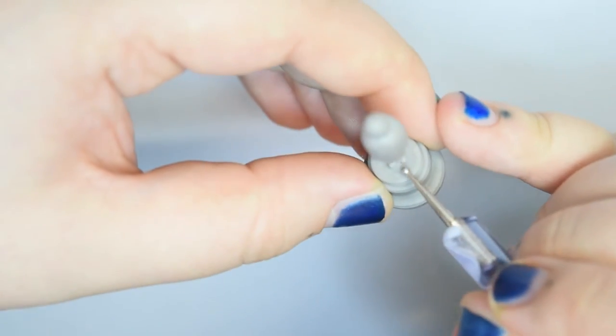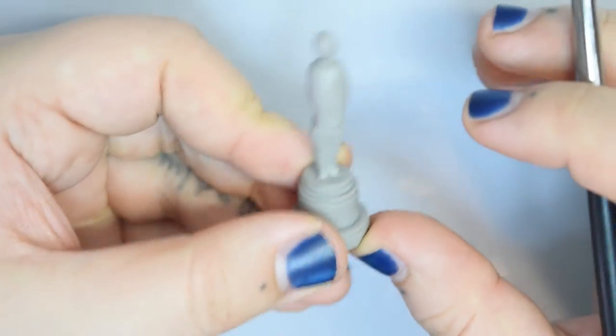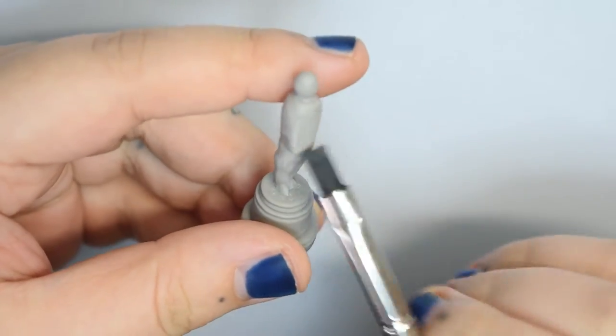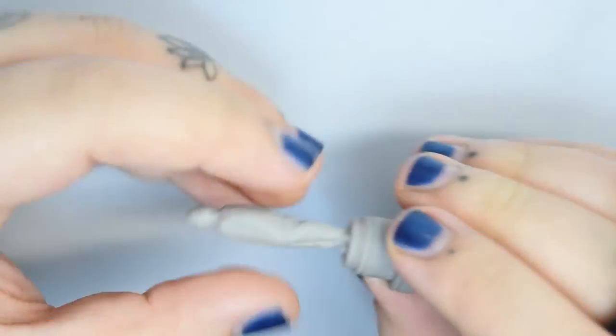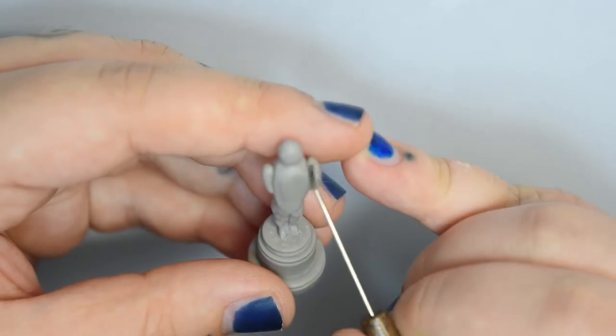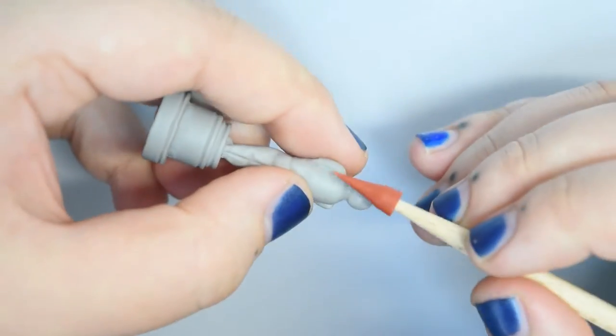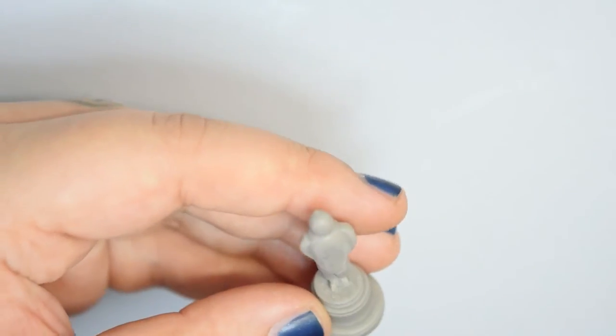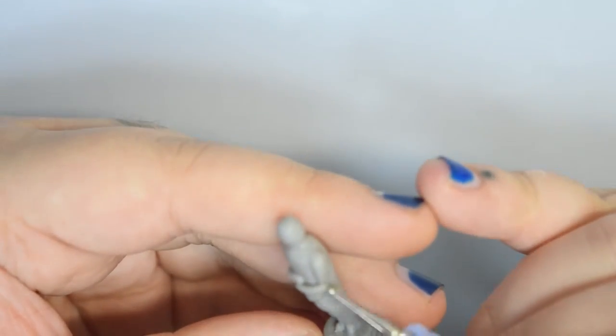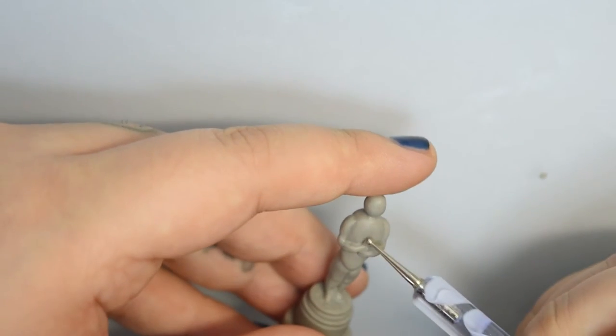Then I added his mini feet, poi ho aggiunto i piedini. And the arms, e le braccia. Then I shaped the sword, poi ho modellato la spada.